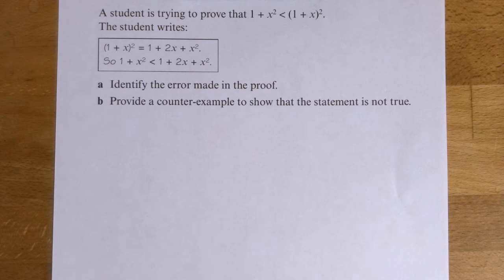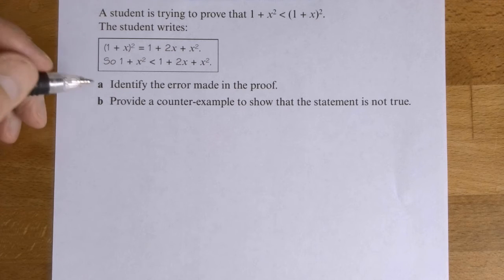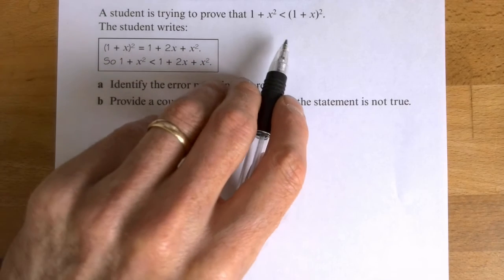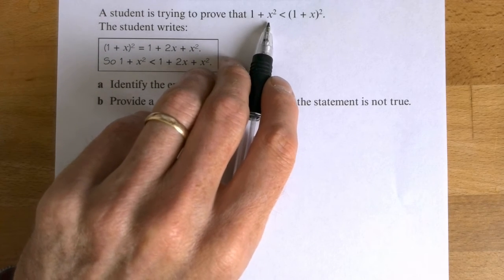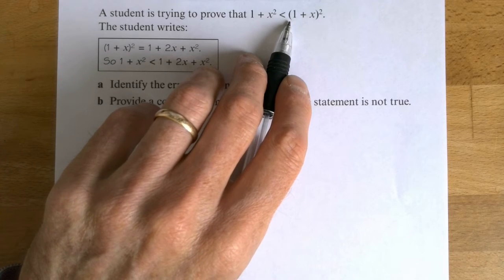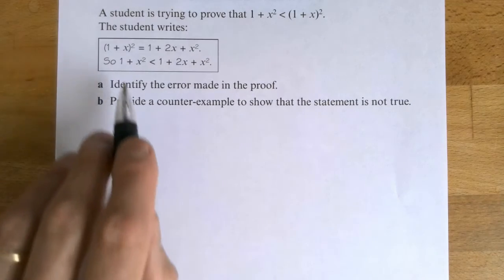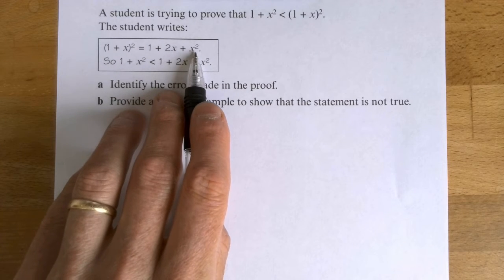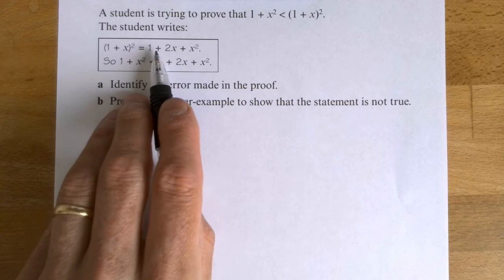So by far the most common sort of proof by counter example question is one like this where they show you some student work and they ask you to identify the error. And then it normally goes on to a counter example type question. So in this one the student's trying to prove that 1 + x² is less than (1 + x)². So the student has expanded the right hand side and got that. And they are trying to convince us that this is always going to be bigger than that.